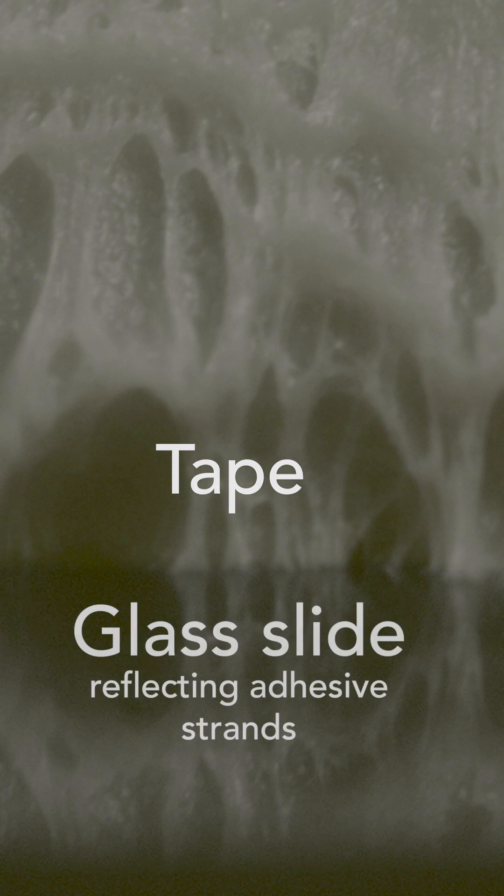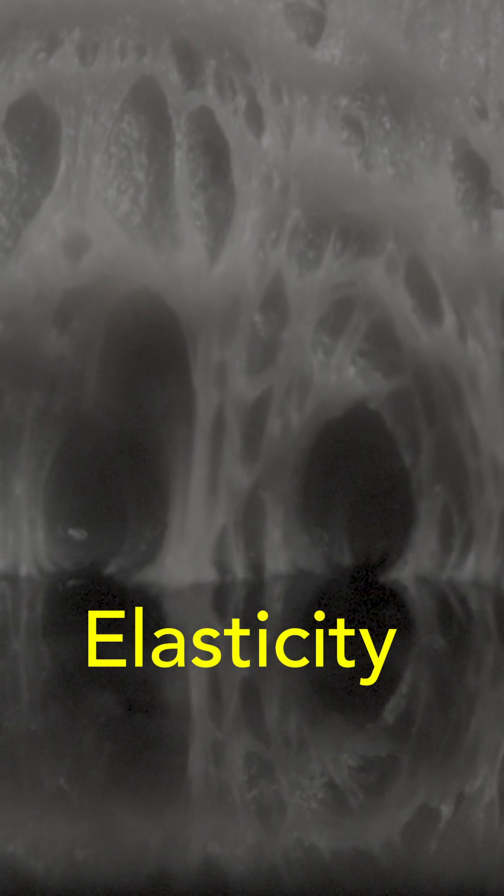When I remove the tape from the glass slide, here's the tape, here's its reflection, the adhesive stretches, becomes filamented, and it elastically snaps off the glass.